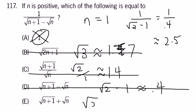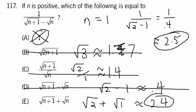And we're left with root N plus 1 plus the square root of N, which is about 2.4. Like I said, this is not an exact science, but 2.4 is close to 2.5.